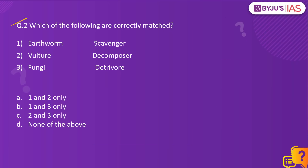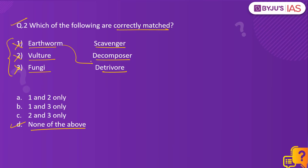Let's take up the second question: Which of the following are correctly matched? Earthworm — scavenger; Vulture — decomposer; Fungi — detritivore. All three are incorrectly matched, so option D is the right answer. The earthworm is essentially a detritivore, whereas vulture is a scavenger and fungi is a decomposer.